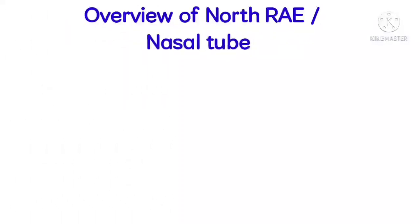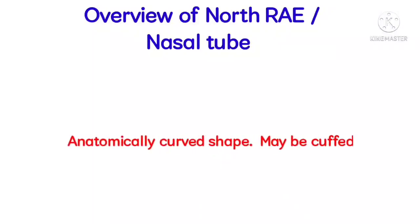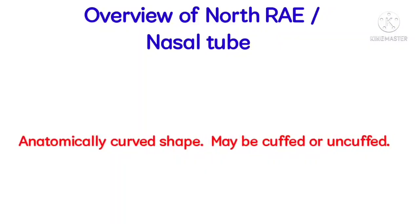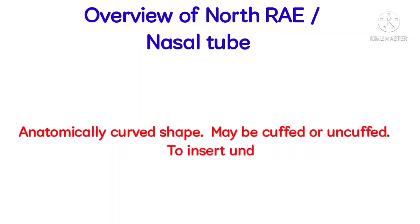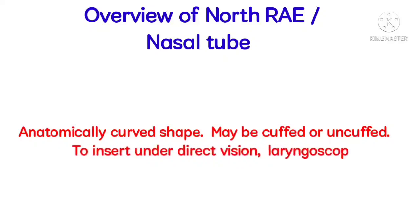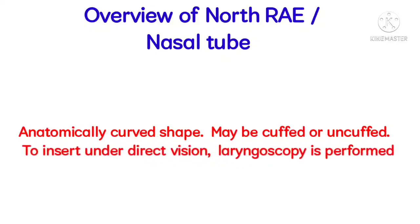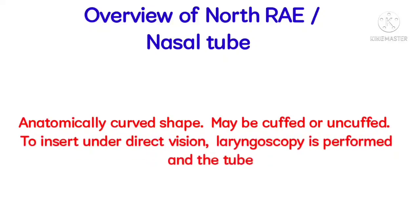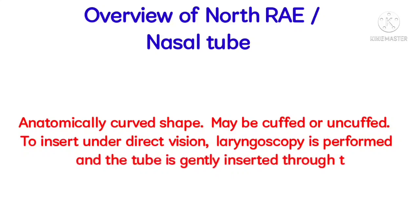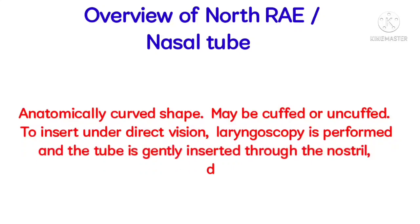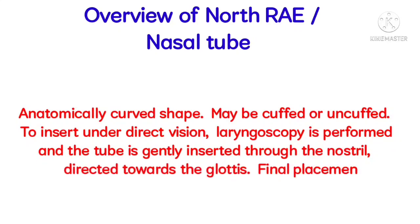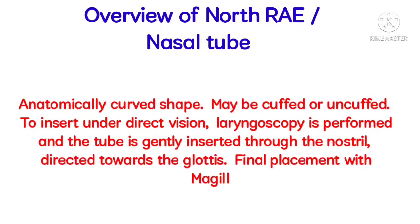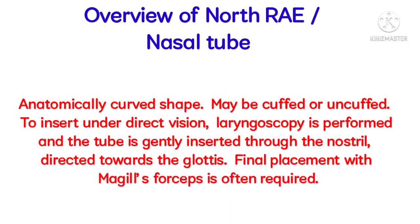Overview of North RAE or Nasal Tube. It has an anatomically curved shape and may be cuffed or uncuffed. To insert under direct vision, laryngoscopy is performed and the tube is gently inserted through the nostril, directed towards the glottis. Final placement with McGill's forceps is often required.